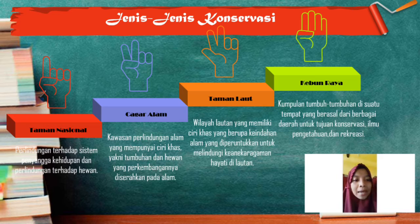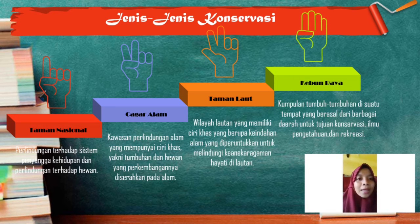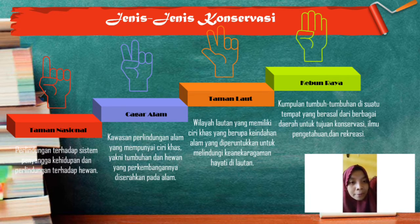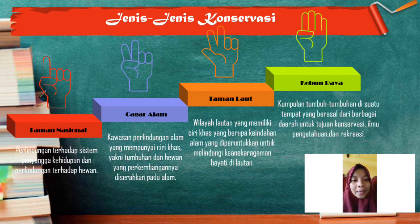The last type of conservation area is the botanical garden (kebun raya), which is a collection of plants and animals from various regions brought together in one place. The botanical garden can also be used as a place for developing scientific knowledge and recreation for the public. Examples include Bogor Botanical Garden and Kuningan Botanical Garden.